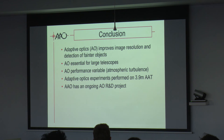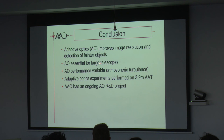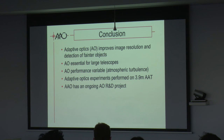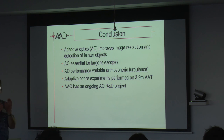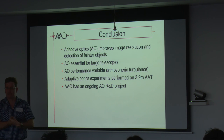In conclusion: AO improves image resolution and detection of fainter objects — it's essential for large telescopes. AO performance can be very variable due to atmospheric turbulence — some days poor, some days better — and some techniques like ground-layer AO may be better than multi-conjugate AO depending on how the layers behave. We have adaptive optics experiments performed on the 3.9-meter AAT, and we also have an ongoing small in-house AI research project here to keep skills updated in adaptive optics. Thank you.